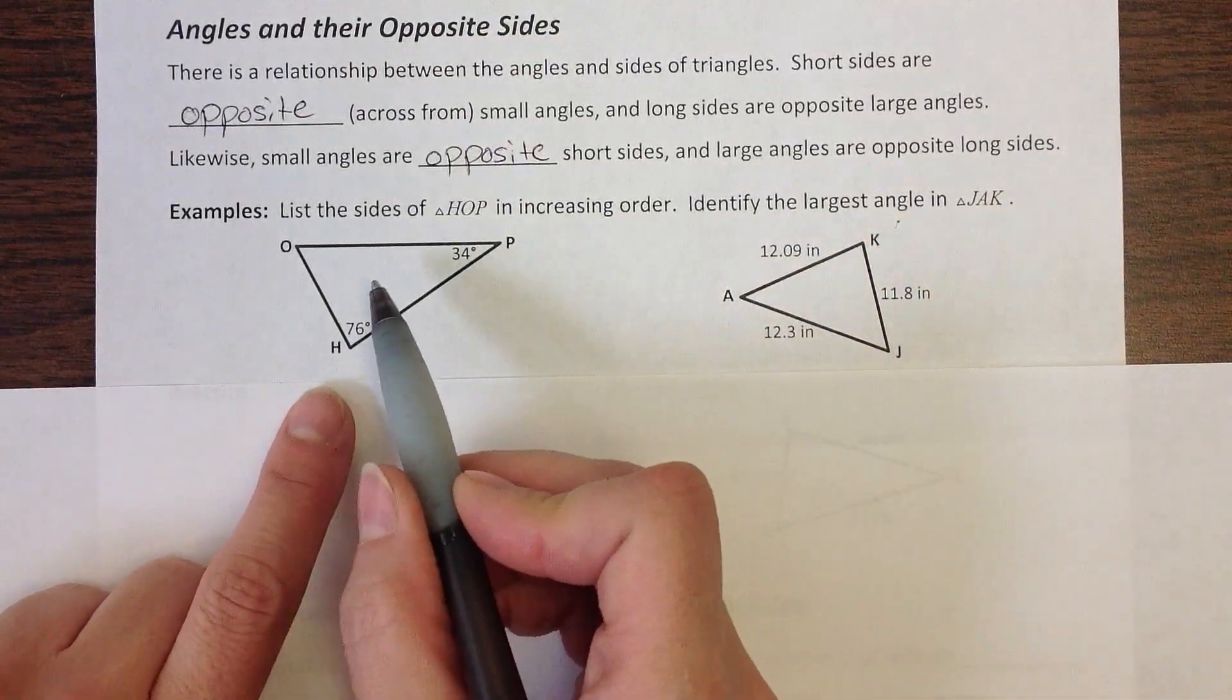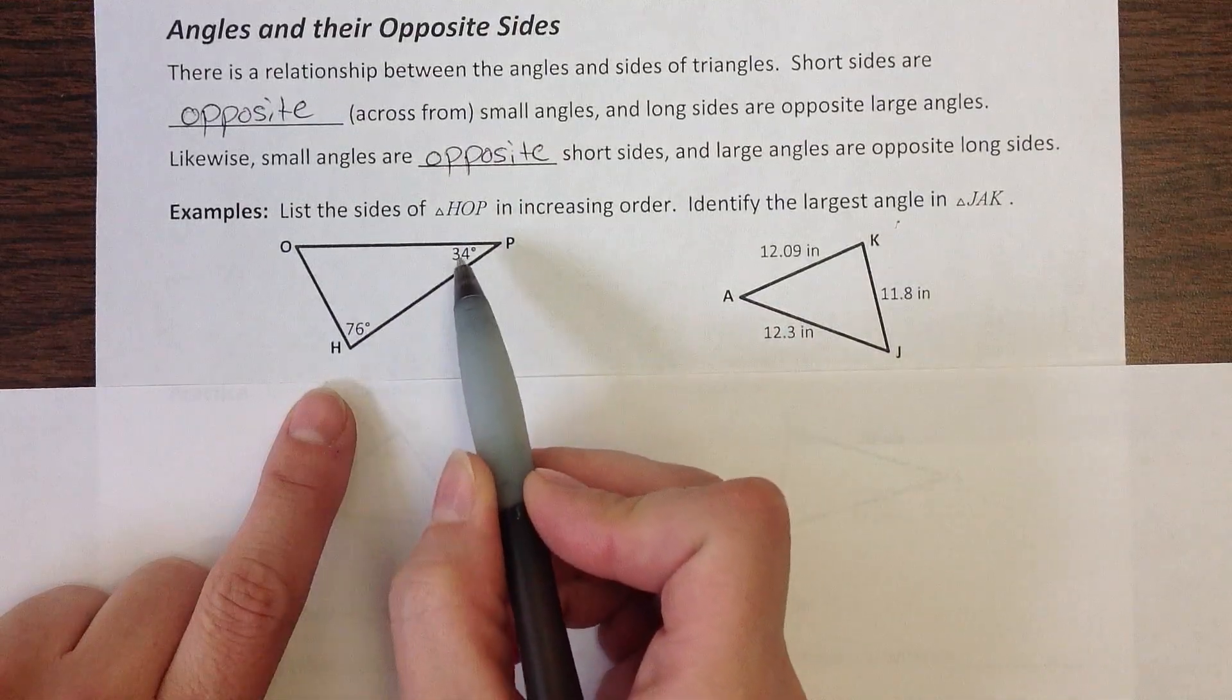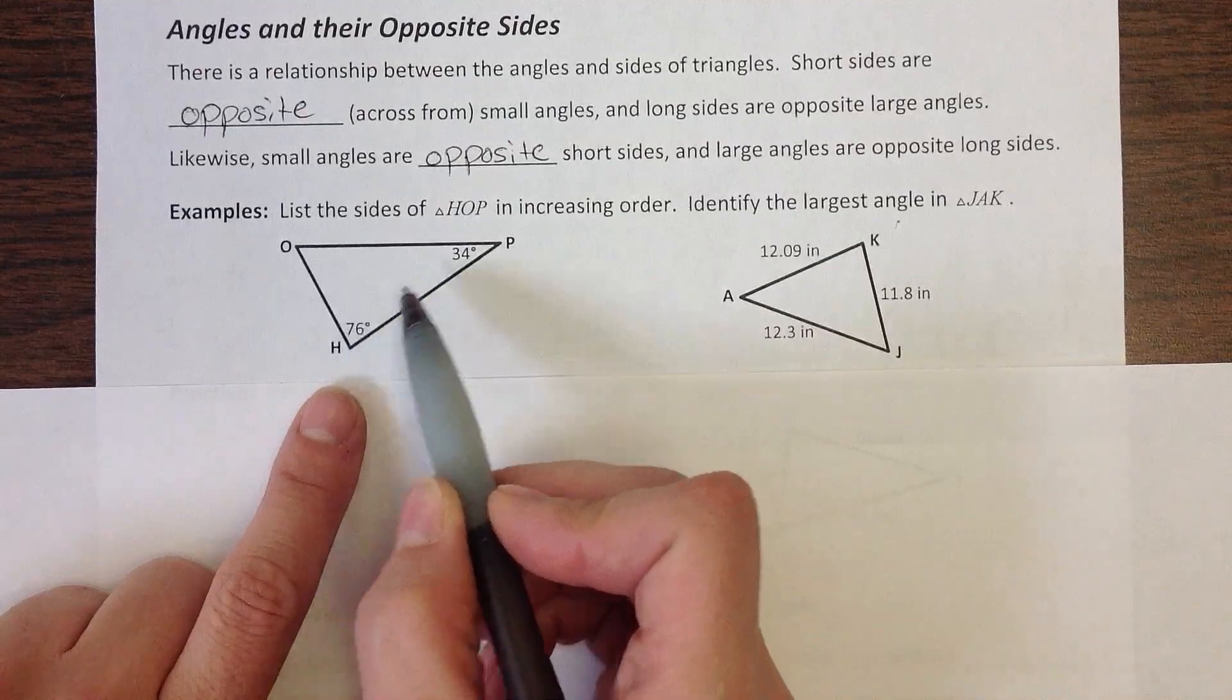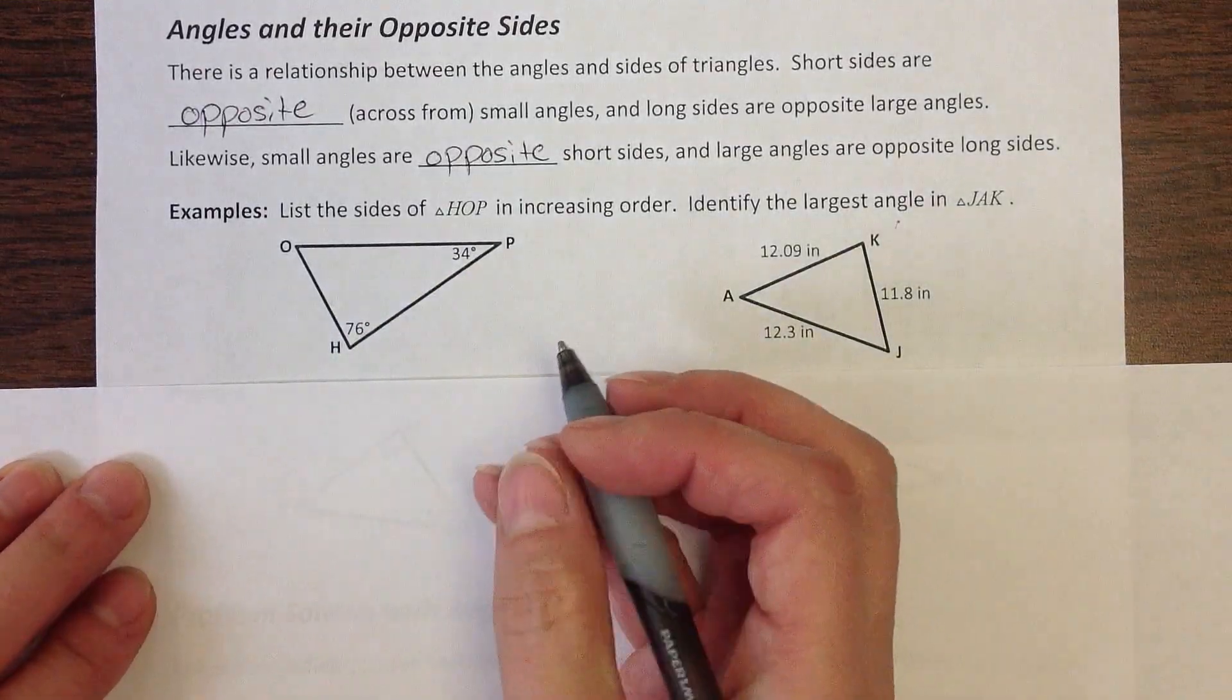When you're dealing with classifying or ordering the sides, it's really important that you know all three angle measures. So in this particular example, I've only given you information about two of the angles. So let's find that third one before we make any decisions.